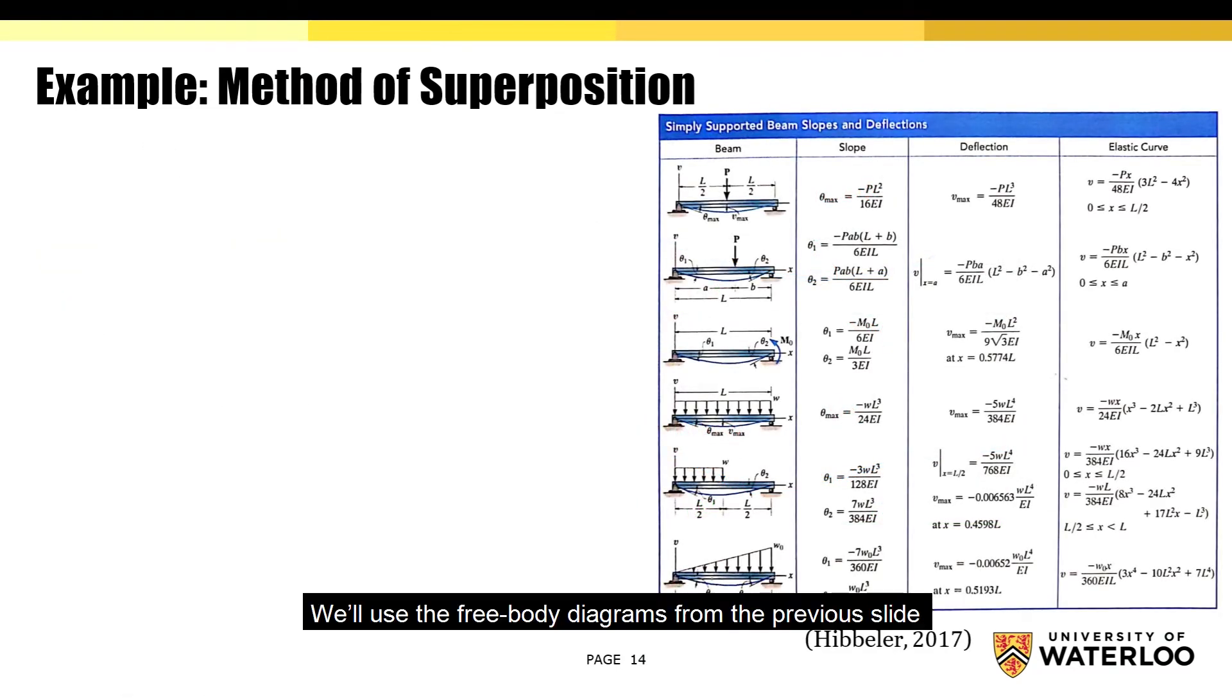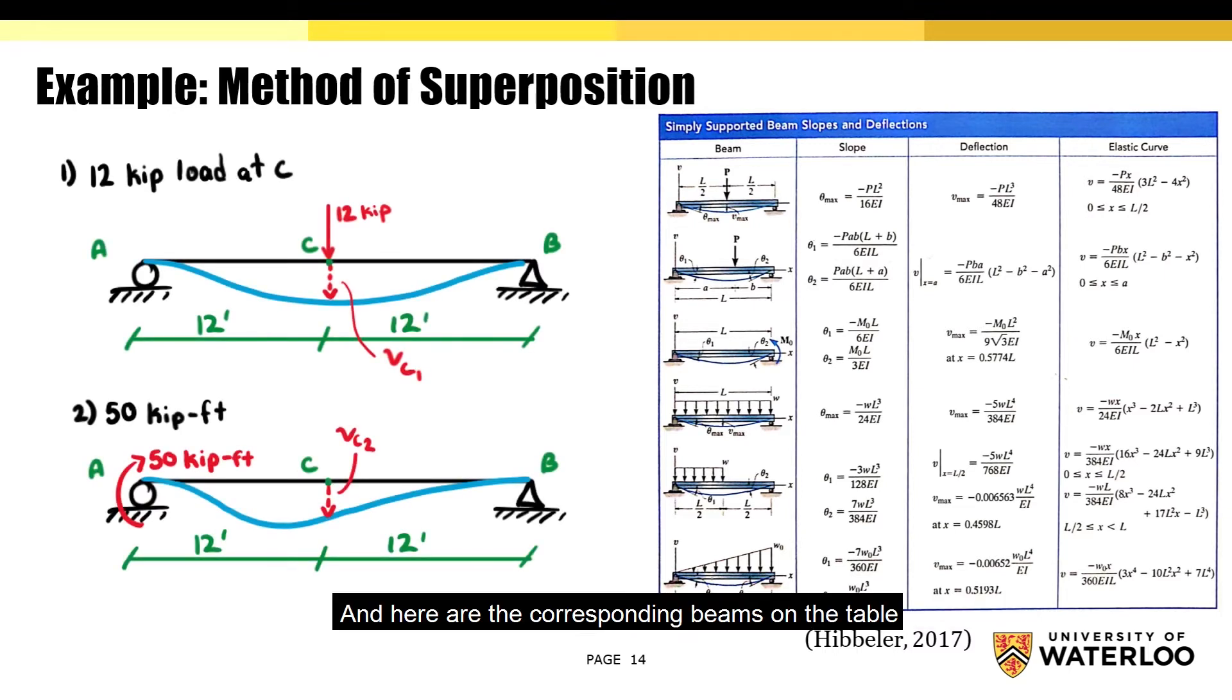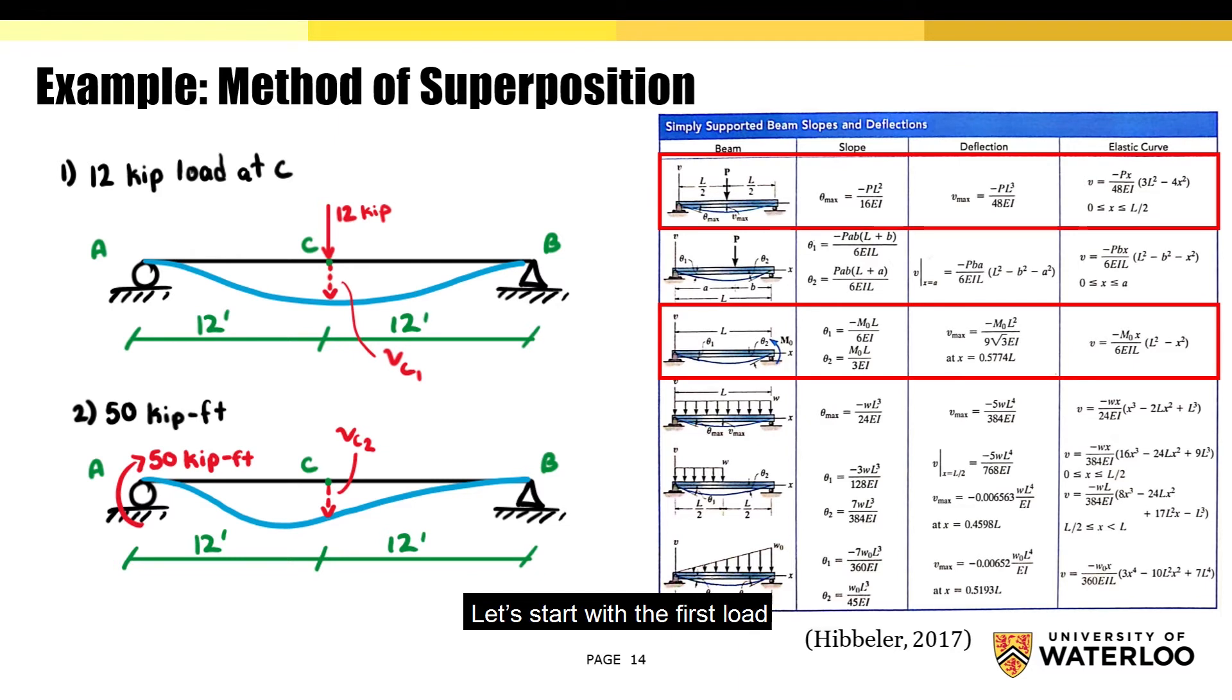On this slide, we'll use the free body diagrams from the previous slide to figure out what equations we'll need to solve for the deflection at point C. Alright, so here are the free body diagrams, and here are the corresponding beams on the table. Let's start with the first load. For this particular case, the maximum deflection will occur at the midspan of the beam, which is where point C is located, so we can use this formula here.